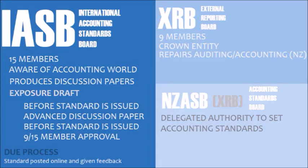Next we have the New Zealand External Reporting Board, or the XRB. They are responsible for preparing auditing and accounting standards in New Zealand. They are 9 members and they are also a crown entity. Finally we have the New Zealand Accounting Standards Board, or the NZASB. They are within the XRB and are delegated the authority to set accounting standards.